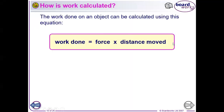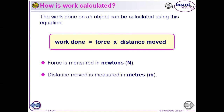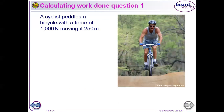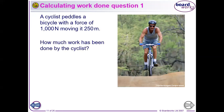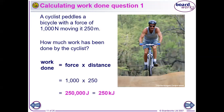So we know that work done can be calculated by force times distance moved. Force is measured in newtons, distance in metres, and work done is measured in joules — because it is energy transferred. Here's a calculation: a cyclist pedals with a force of 1,000 newtons, moving 250 metres. Work done equals 1,000 times 250, which equals 250,000 joules.